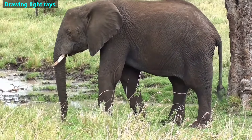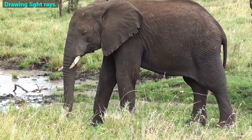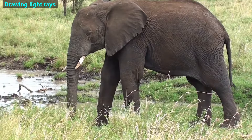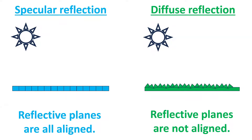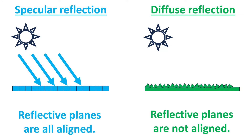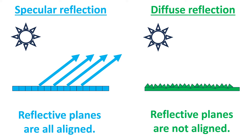Most animals and plants seem to be curved, so we might conclude they have no reflective planes. But just like this ball is made of many plane mirrors, all surfaces are made of reflective planes, though some may be much smaller than a square millimeter. If those reflective planes are all aligned, then that object will make a specular reflection. But if those reflective planes are not aligned, then that object will make a diffuse reflection.